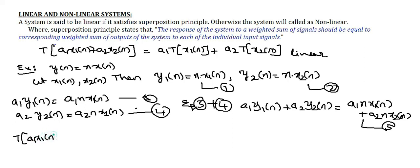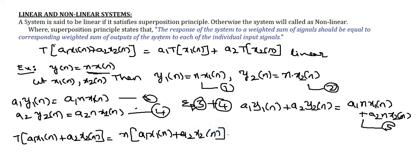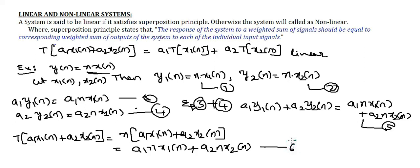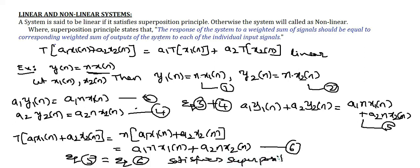Now for the left-hand side, the overall response T of [a1·x1(n) + a2·x2(n)] equals n·[a1·x1(n) + a2·x2(n)], which is equation 6. By comparing the LHS and RHS of equations 5 and 6, both are the same. So it satisfies the superposition principle; hence the given system y(n) = n·x(n) is a linear system.